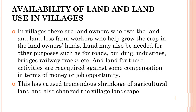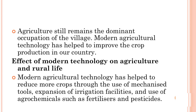Now we come to the availability of land and land usage in villages. In villages, there are land owners who own the land and landless farm workers who help to grow the crops. Land may also be needed for other purposes such as roads, buildings, industries, bridges and railway tracks. Land for these activities is acquired against some compensation in terms of money or job opportunities. This has caused a tremendous shrinkage of agricultural land and changed the village landscape. Agriculture still remains the dominant occupation of the village, and modern agricultural technology has helped to improve crop production.